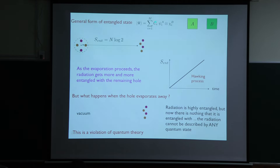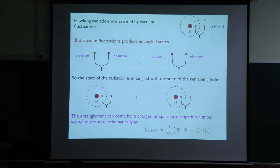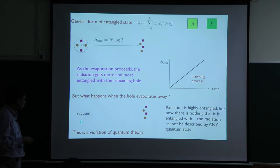The more terms in the sum, the more entangled the state is. A measure of entanglement is called the entanglement entropy S-entanglement. After radiating N particles, in that simple model the entanglement entropy becomes N times log 2, because each zero-one pair contributes log 2 of entanglement. So if you plot the entanglement entropy as a function of time, it monotonically increases with each emission, because each outgoing particle is entangled with its partner inside.